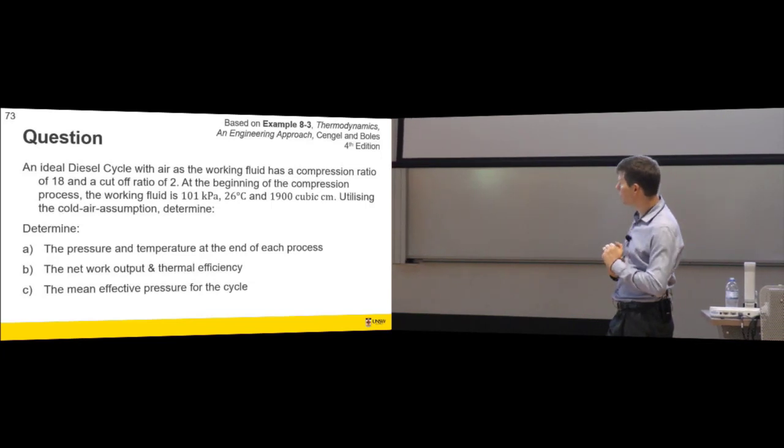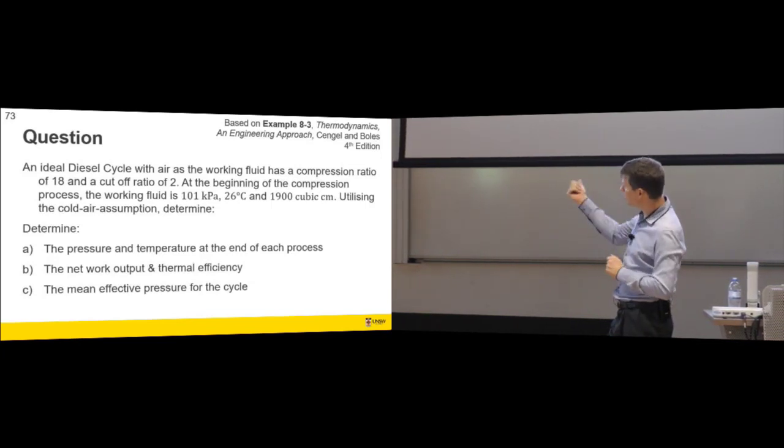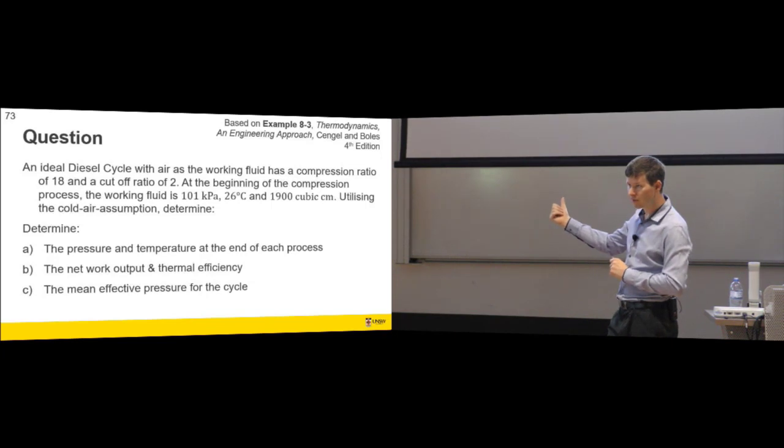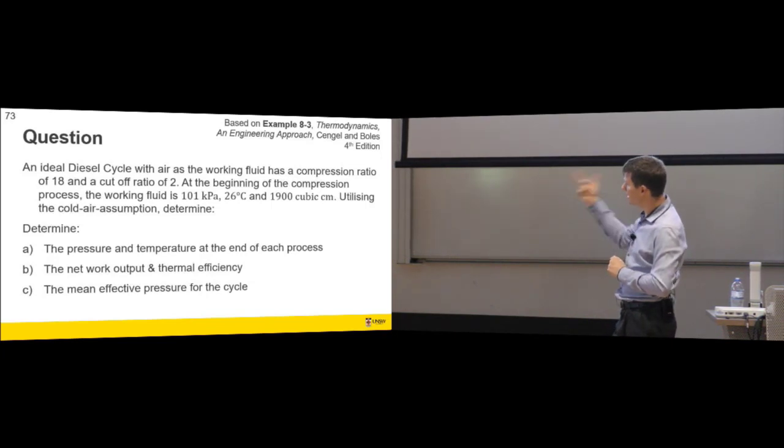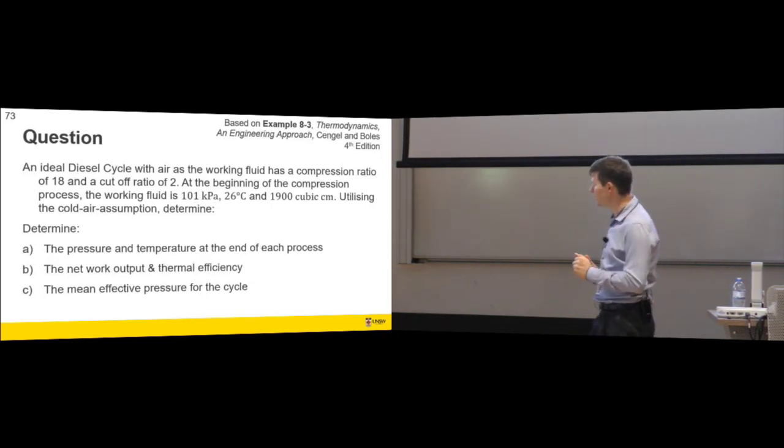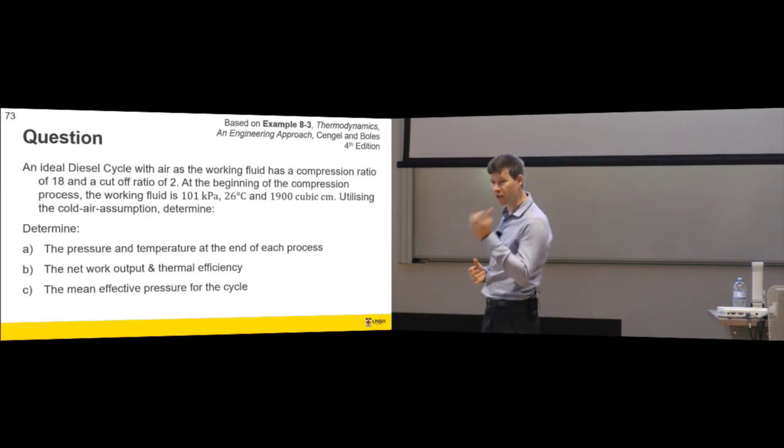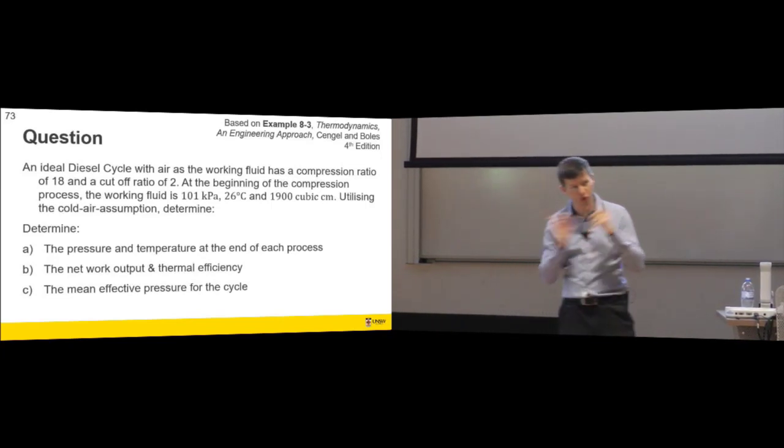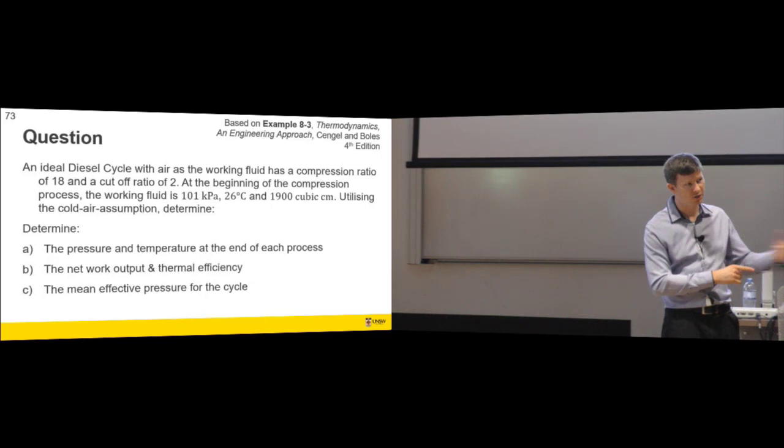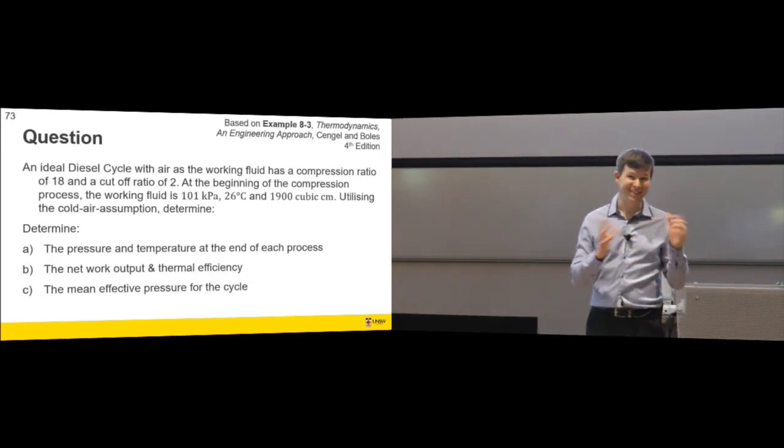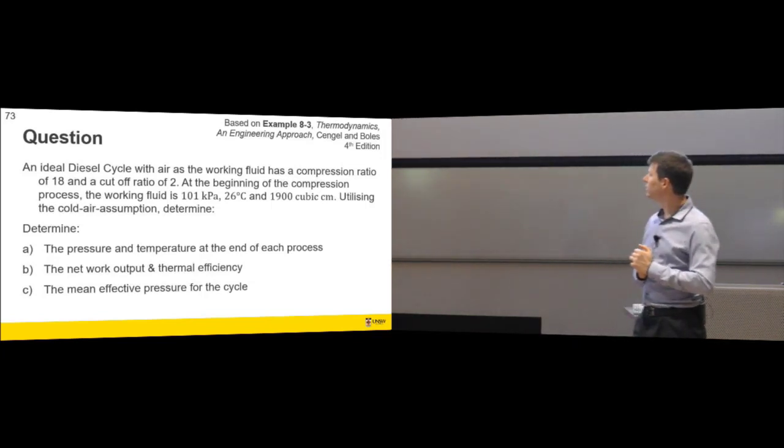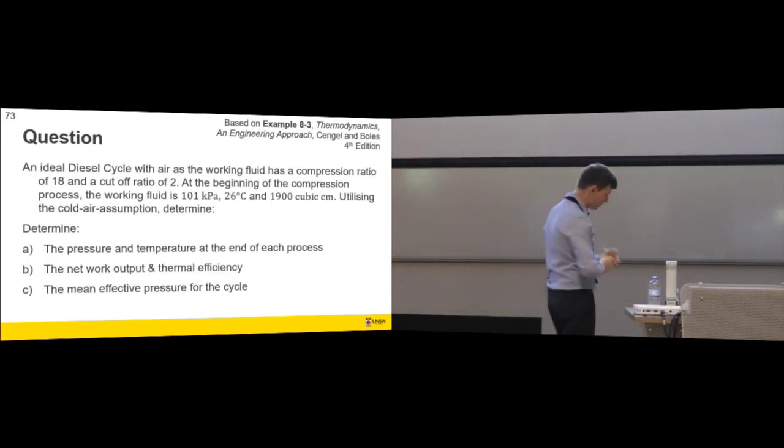At the beginning of the compression process, the working fluid is 101 kilopascals, so atmospheric nominally, 26 degrees C, and we've got an engine size. So the cylinder is almost a 2 liter cylinder. This is a large diesel machine. Utilizing cold air assumption, determine pressure and temperature at the end of each process, the network output and thermal efficiency, and the mean effective pressure of the cycle.